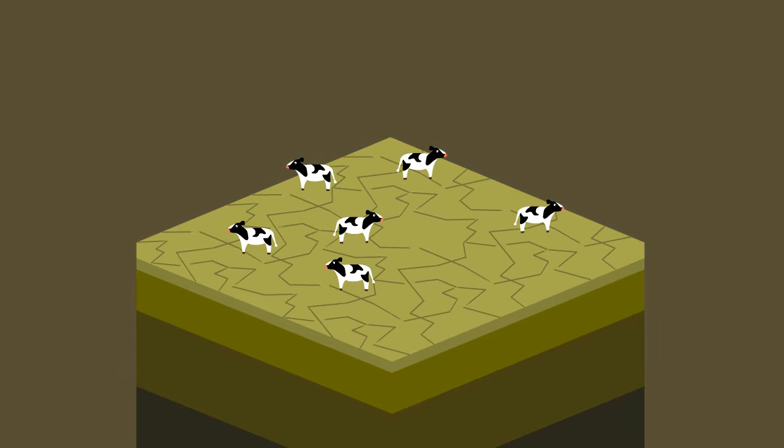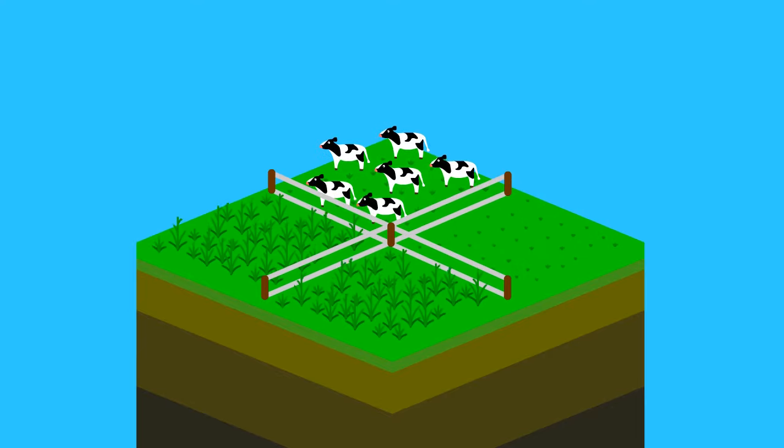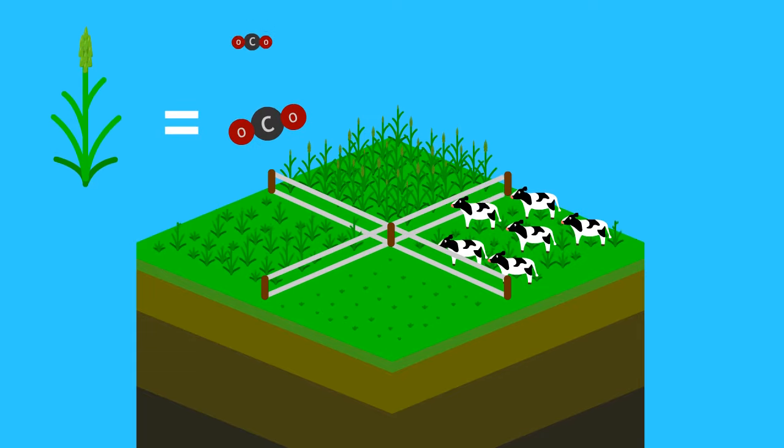But if the animals are kept in a tightly packed herd, like they used to be in nature, the grass has time to grow before being eaten. All that biomass in the grass is carbon that comes from the air.